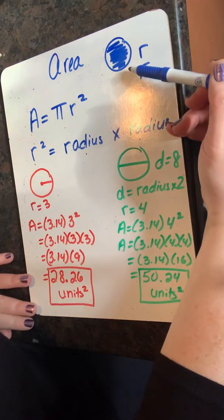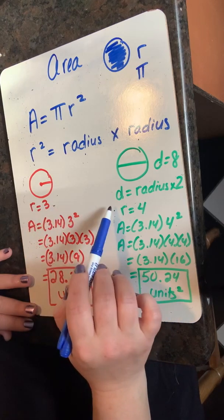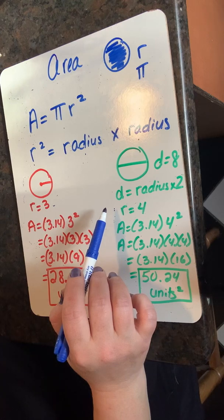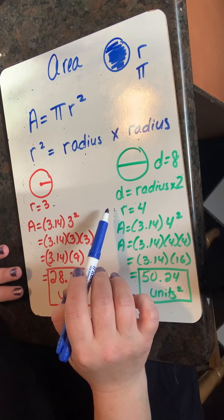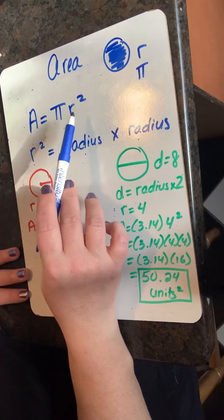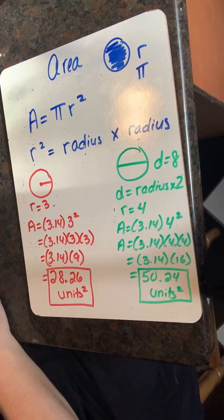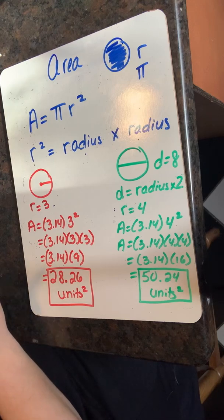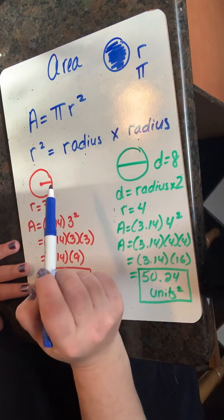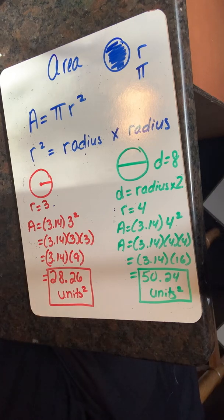So to find the area of a circle, I need to first find the radius. Entonces, para encontrar el área de un círculo, primero necesito encontrar el radio. And then I plug into the equation area equals pi times radius squared. Y luego me conecto al área de ecuación igual a pi por radio al cuadrado. R squared is another way of saying radius times radius. R al cuadrado es otra forma de decir radio por radio.